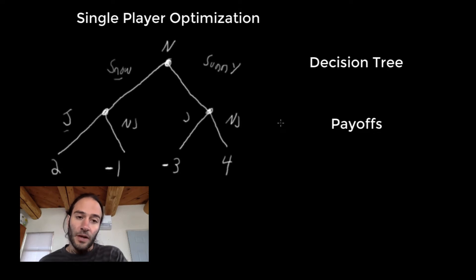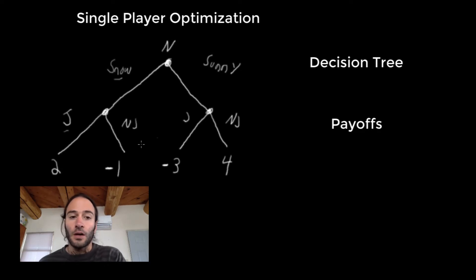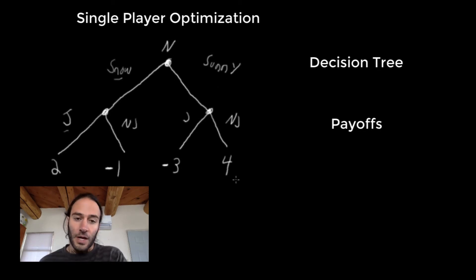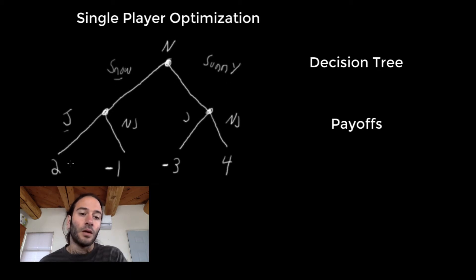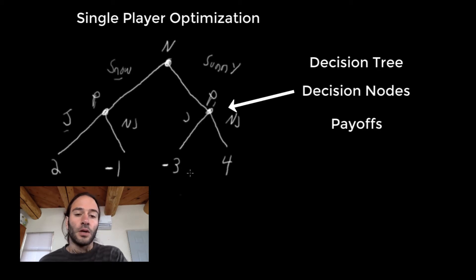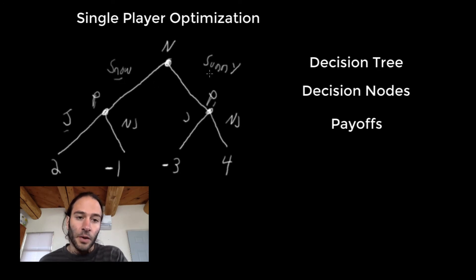What is crucial about this is that you don't have to pick your action before you observe whether or not it's snowy or sunny. So what you can say is: if it's snowy, then I'll wear my jacket; if it's sunny, I won't wear my jacket. Each branch here from nature represents a possible state of the world — snowy or sunny. Player one has a decision node for each state. At each decision node, you decide whether or not to wear a jacket, and then you get a payoff according to what nature was and whether or not you wore a jacket.